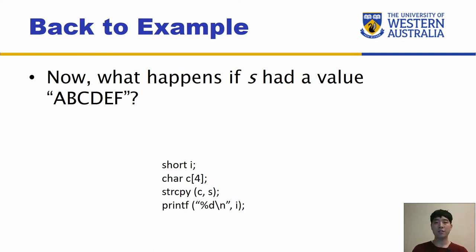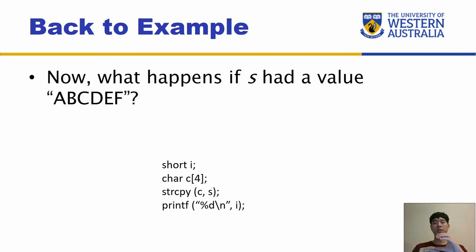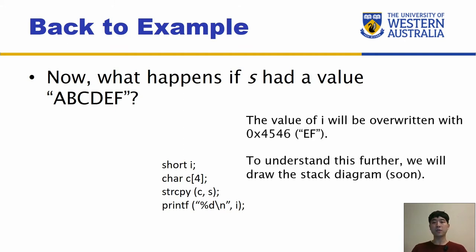So back to the example — what happens if S had the values A, B, C, D, E, F? Following through from the previous explanation: the short integer I gets put into the stack, and remember short is two bytes. Then we have char C[4] in the stack. String copy copies S — which contains six bytes, six hex values — into C. Four of them fill C, and the remaining two overwrite short I, so the value of I will be overwritten with values E and F.